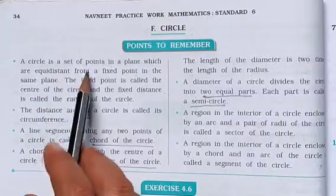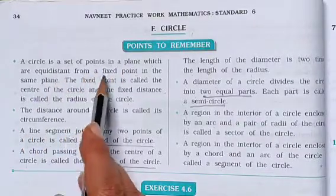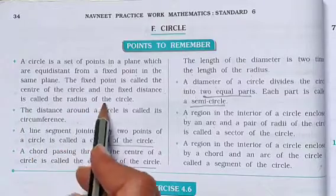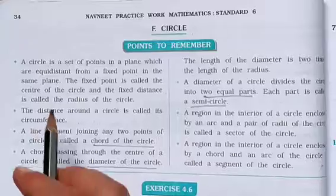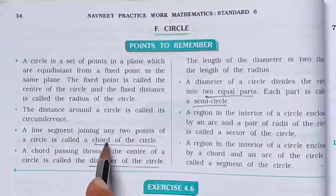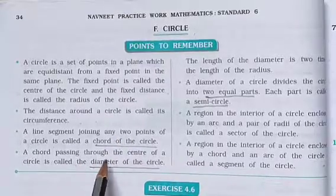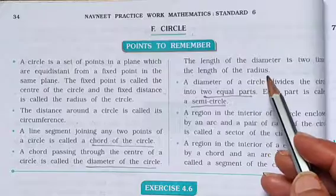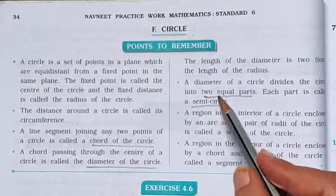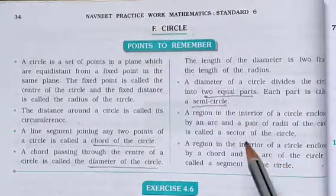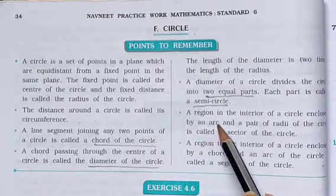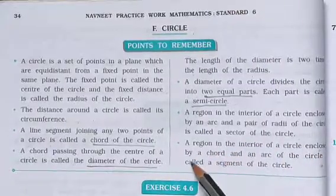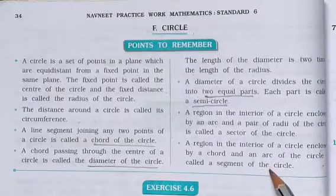Next point: Circle. A circle is a set of points in a plane which are equidistant from a fixed point in the same plane. The fixed point is called the center and the fixed distance is called the radius. The distance around a circle is called its circumference. A line segment joining any two points on a circle is called a chord. A chord passing through the center is called a diameter, and the diameter equals two times the radius. A diameter divides the circle into two equal parts called semicircles. A region enclosed by an arc and a pair of radii is called a sector, and a region enclosed by a chord and an arc is called a segment of the circle.